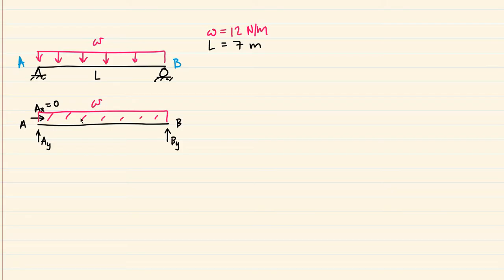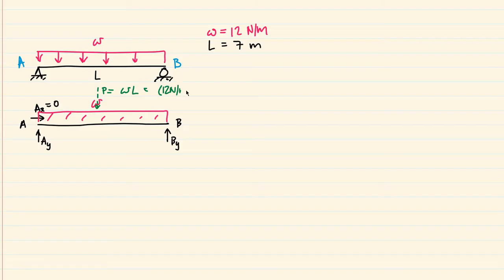To make this problem easier, we can resolve the distributed load into an equivalent point load when finding reactions. We can use the single point load in the middle to figure out what AY and BY are. We find P by taking W times L: 12 newtons per meter times 7 meters equals 84 newtons. Do note that when you draw your shear and moment diagram, do not use this P load — we are only doing this to find the reactions.